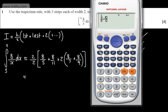Then we'll have 2 times the other values added up, so plus 2 times 8 over 7 plus 8 over 9.